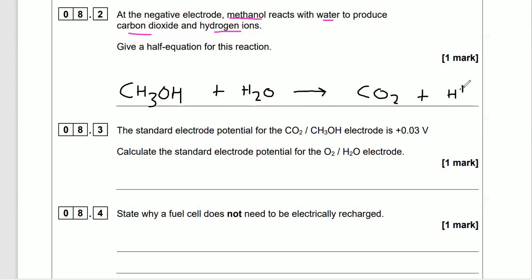Now balance the elements. Methanol (CH₃OH) has four hydrogens from the CH₃OH and two from water — six hydrogens on the left, but only one H⁺ on the right, so put a 6 in front of H⁺. Now six hydrogens on each side. Check oxygen: one in methanol, one in water, two in CO₂ — balanced. Carbon: one in methanol, one in CO₂ — balanced. Now check electrical balance: neutral on the left, 6+ on the right, so add 6 electrons to the right.